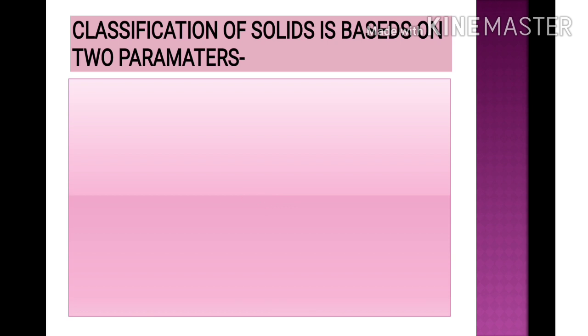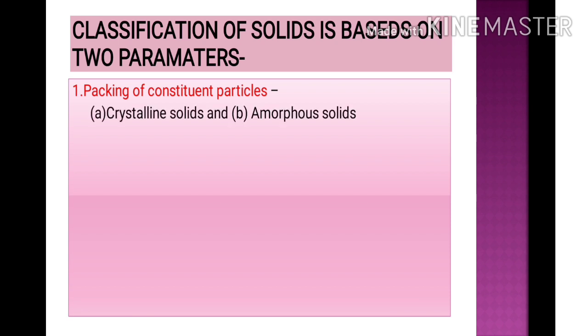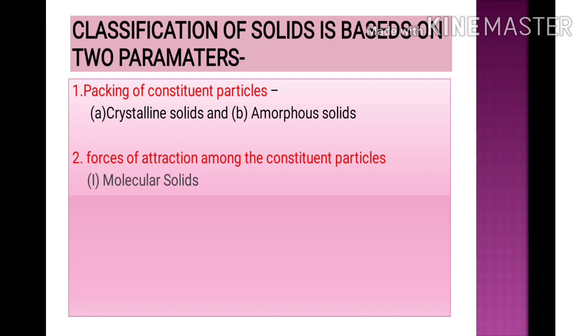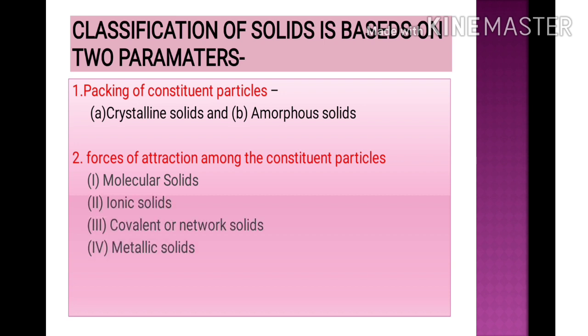Classification of solids is based on two parameters. First, based on the packing of constituent particles, it is of two types: crystalline solids and amorphous solids. Second, based on the force of attraction among constituent particles, it is of four types: molecular solids, ionic solids, covalent or network solids, and metallic solids. We will study each one by one in detail.